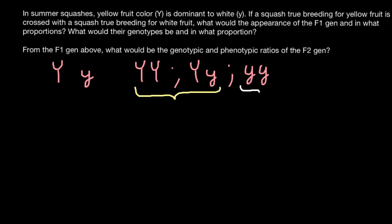The YY and Yy genotypes would produce phenotypically yellow squash, and small y small y would produce phenotypically white squash. We are told we have to cross two parents that are true breeding. The homozygous dominant (YY) and homozygous recessive (yy) genotypes are both true breeding, while the heterozygous (Yy) is not.